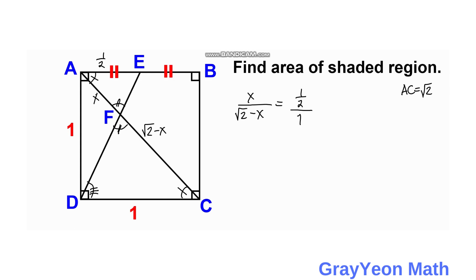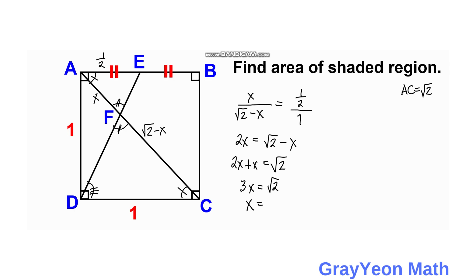The ratio is 1/2 because segment AE is formed by bisecting AB. So we have 2X equal to √2 minus X, giving 3X = √2, and X equals √2 over 3. This X is the length of AF.